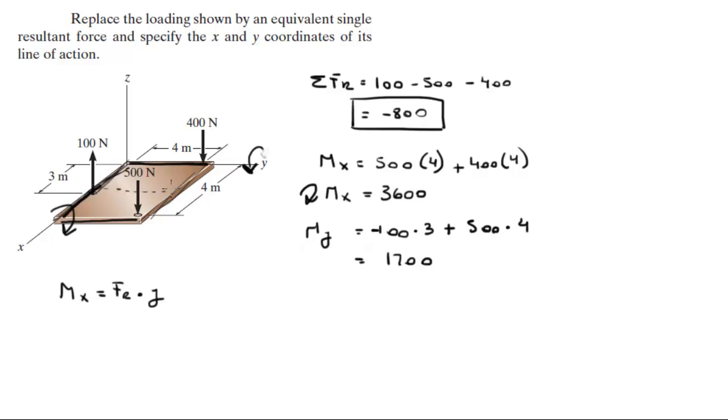Because the moment that you're creating in the x would give you the measurement from the x to the y where you'll be acting. So 3600 equals 800 times y, and y equals 4.5 meters.